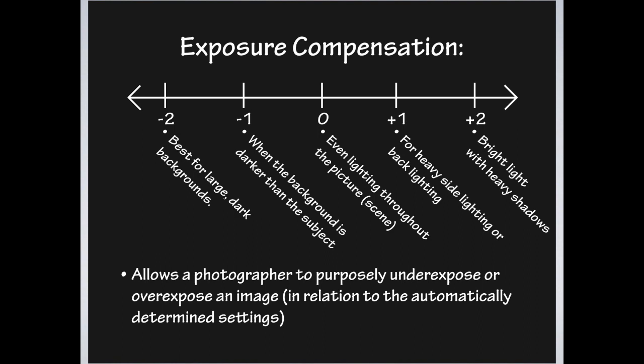Exposure compensation is important, especially for those shooting in point-and-shoot mode. You may have seen it on your camera — on an iPhone, when you tap the screen and drag your finger up or down, that's what you're adjusting. Basically, if the exposure compensation is zero, that's what the camera thinks is the correct exposure. If you go negative, the photo gets darker; if you go positive, it gets lighter. There's usually an easy option on your camera for this. If you want to find it on your particular camera, I'm happy to help.